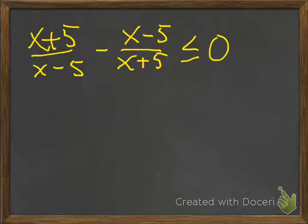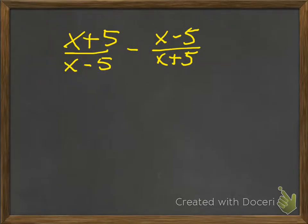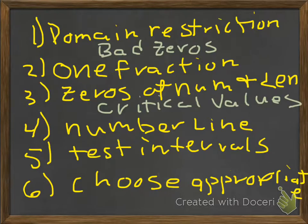In order to solve this, we need a game plan. First, you want to find the domain restrictions — that's going to give you the bad zeros. Two, you're going to want to get one fraction. Three, you want zeros of the numerator and zeros of the denominator — that's going to get you your critical values. Four, you want to put those critical values on a number line. Five, you want to test the intervals of the fully factored form. Six, you want to choose the appropriate values or intervals.